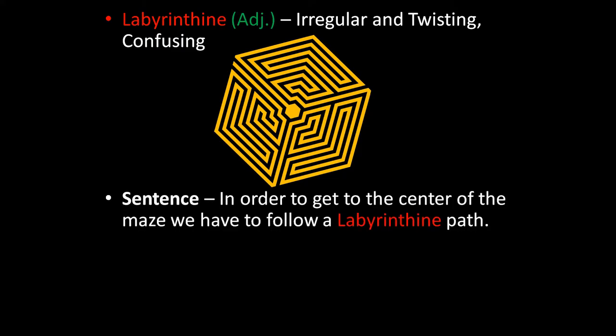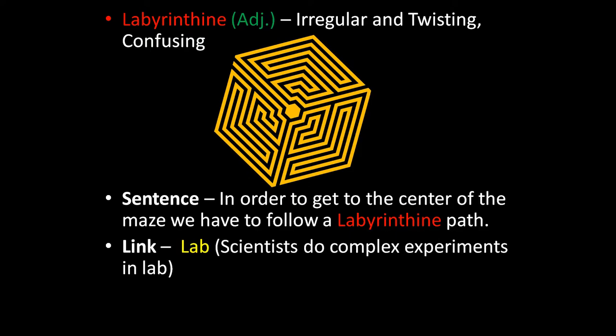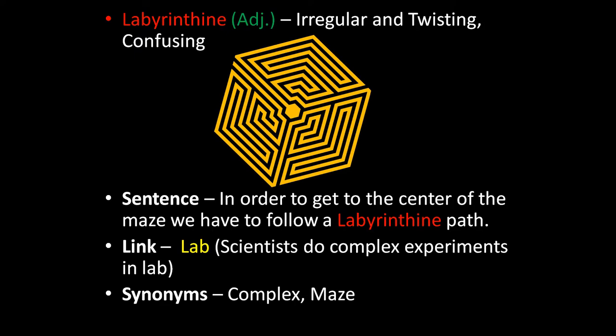The sentence is: in order to get to the center of the maze, we have to follow a labyrinthine path. The linking word here is 'lab.' From the word labyrinthine, take out the word 'lab' — a lab is a place where scientists do complex experiments. The meaning of labyrinthine is complex, irregular, twisting. The synonyms are complex and maze.